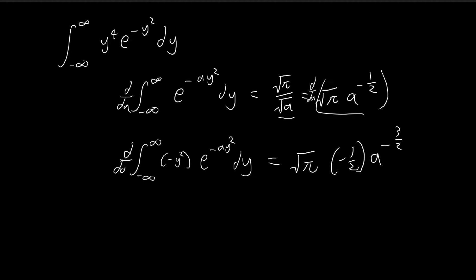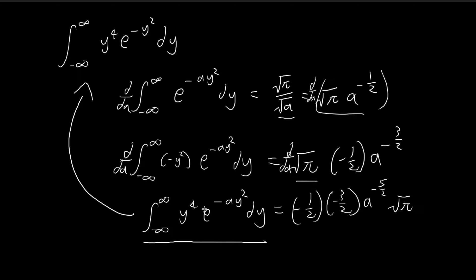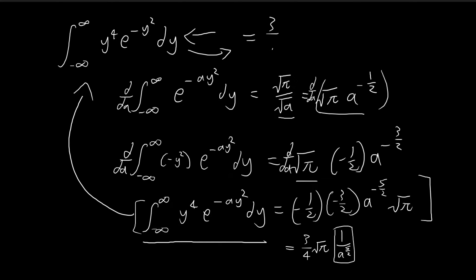We differentiate with respect to a a second time. Differentiating the left side again, the negative y squared comes down, giving us y to the power of 4 times e to the power of negative a y squared dy. On the right-hand side we get negative one-half times the exponent pulled down, giving us (3/4) times the square root of π times a to the power of negative 5/2. Now, since our original integral has a equal to 1, we substitute a = 1, and the right-hand side gives us the integral equals 3/4 times the square root of π.